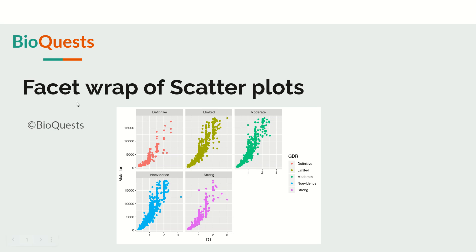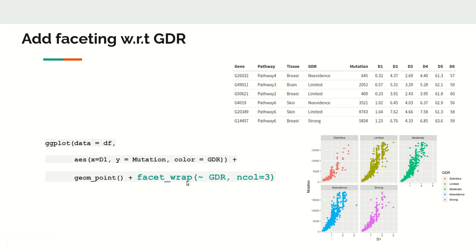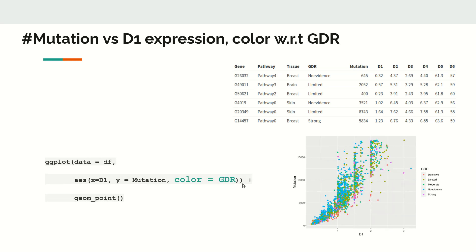In this video we will explore facet wrapping of the scatter plot. If multiple colors are on a single plot, we can split them into different subplots — that is called facet wrapping. We have seen this example where we tried to see the relationship between d1 and mutation, and we added the color aesthetic to color the points with respect to the gdr variable. Now if we add one more layer, lots of points are completely overlapped on top of each other, so we can use the facet_wrap function to make it clearer.